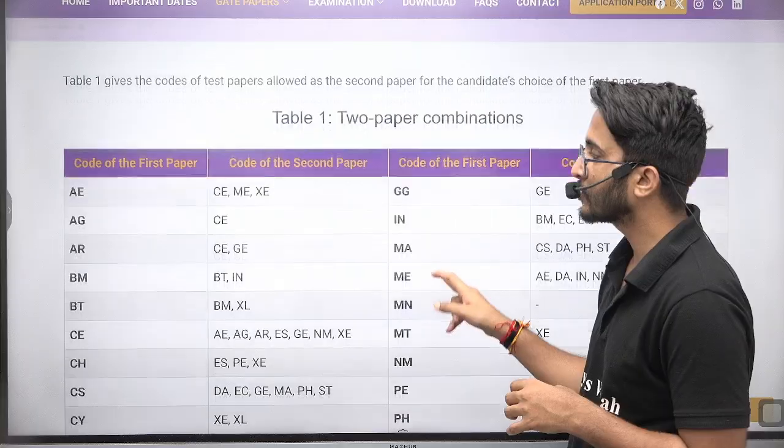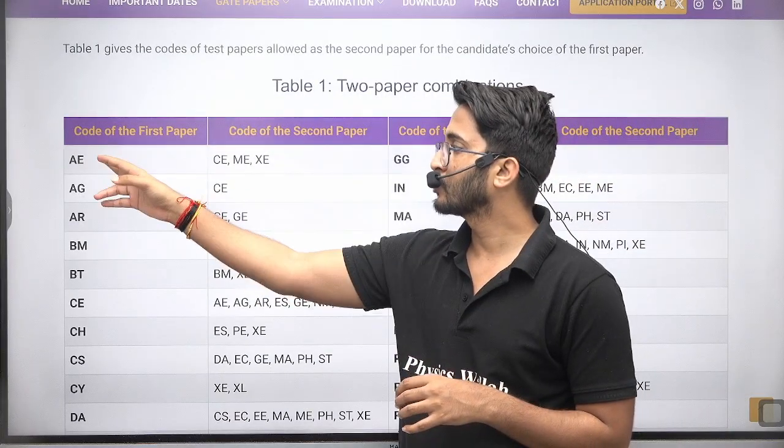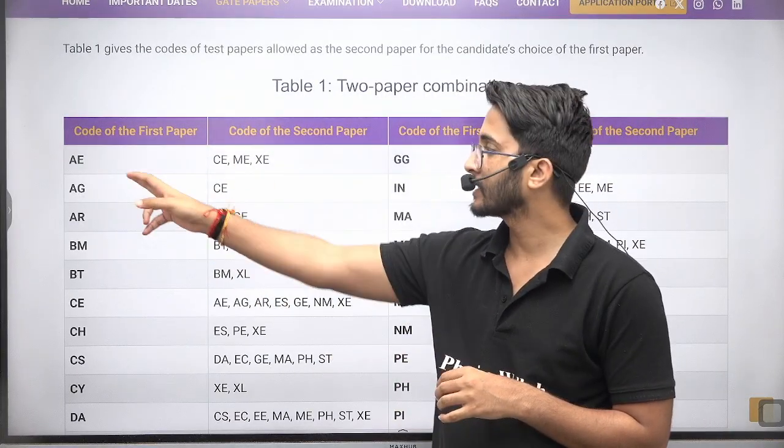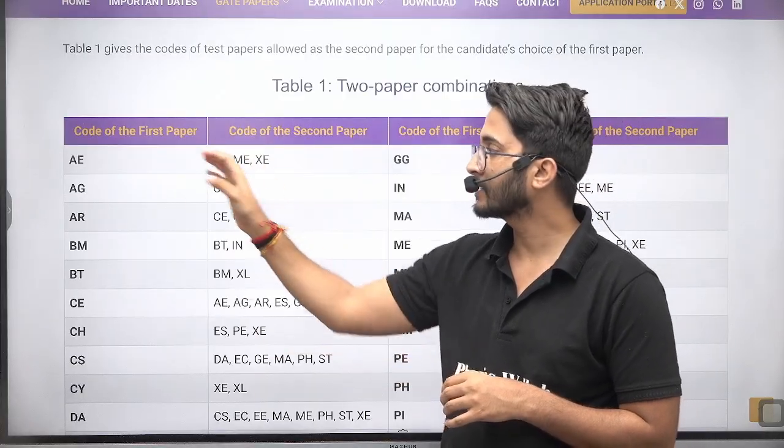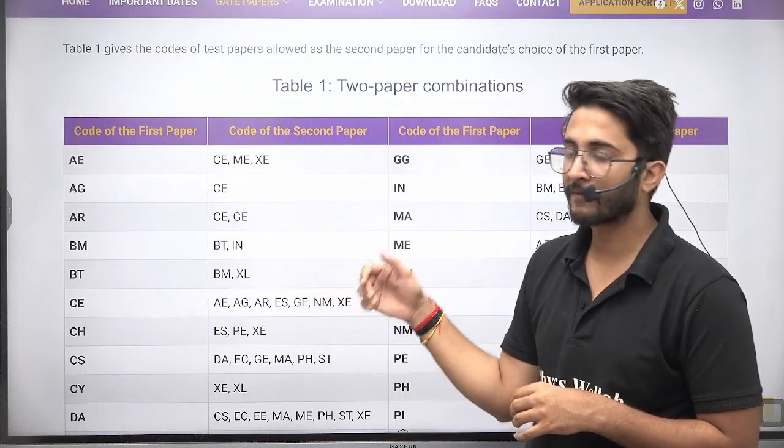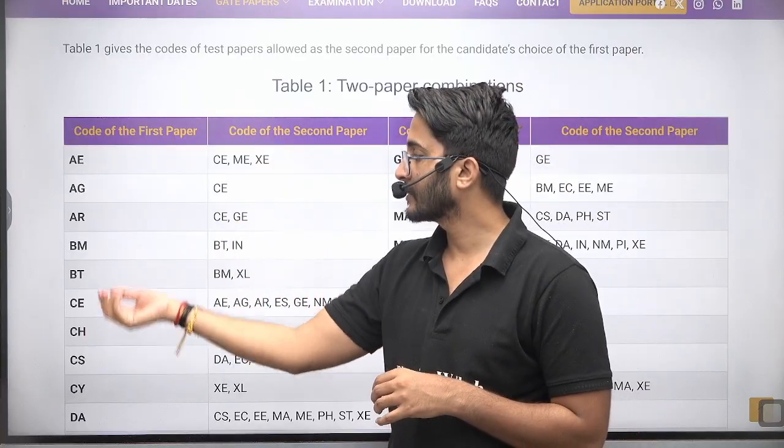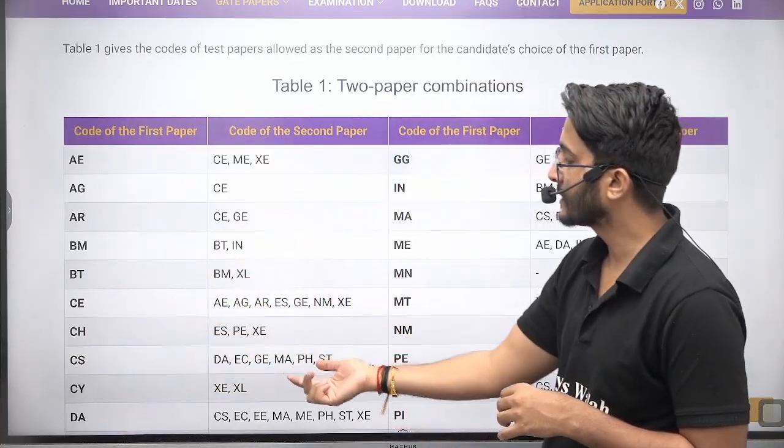So if you are going to choose the Aerospace Engineering as your first paper code, then for second paper you can choose Civil, Mechanical, and AXIS. So guys, this is the combination. If you are going to choose the first subject out of this, then the second subject automatically in this range.